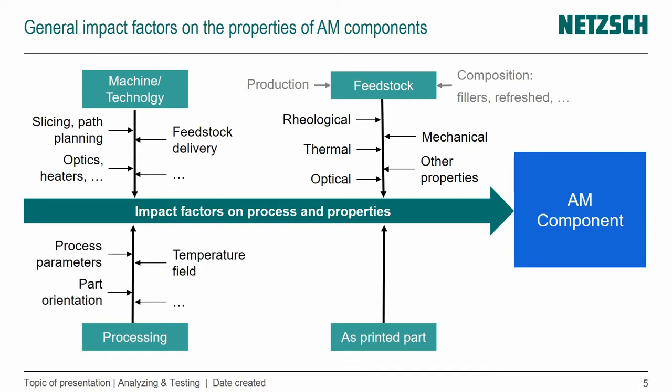When we come to the process, the most obvious aspect is the process parameters, and those indirectly have an effect on the temperature field. For example, what laser power or energy density are we using? What print temperature are we using in material extrusion? What's the layer height? And the UV intensity when we think of photopolymerization — because it has an effect on the temperature field we're creating and the penetration depth of that light source. All very important parameters.